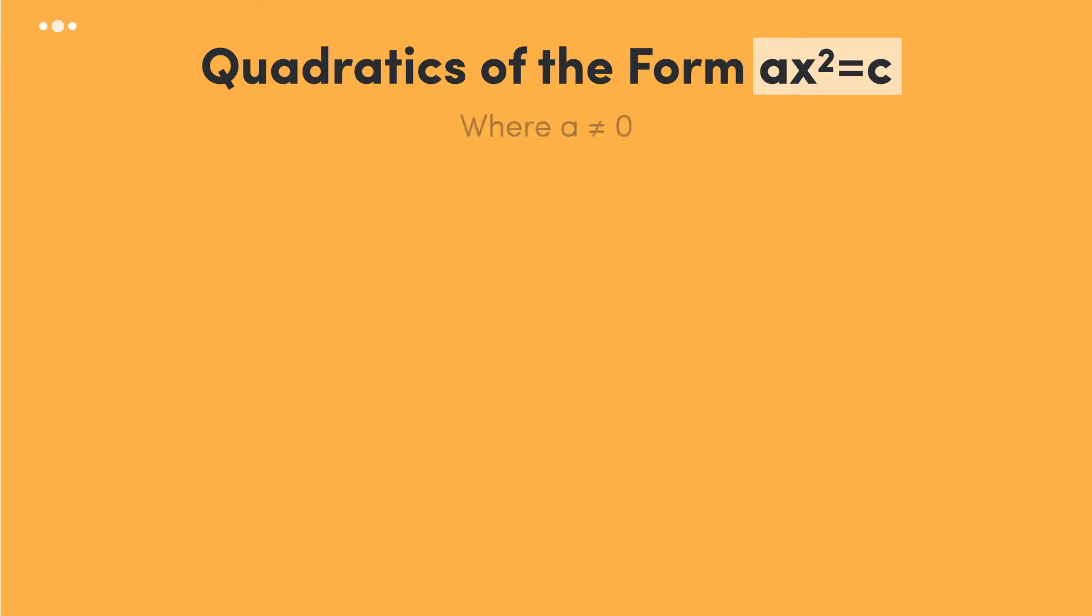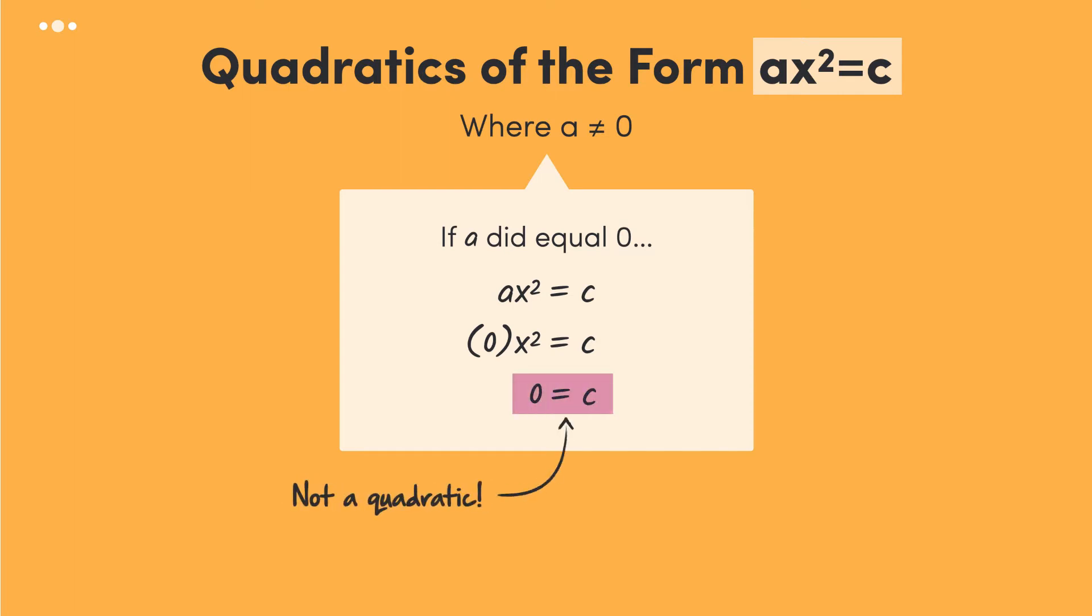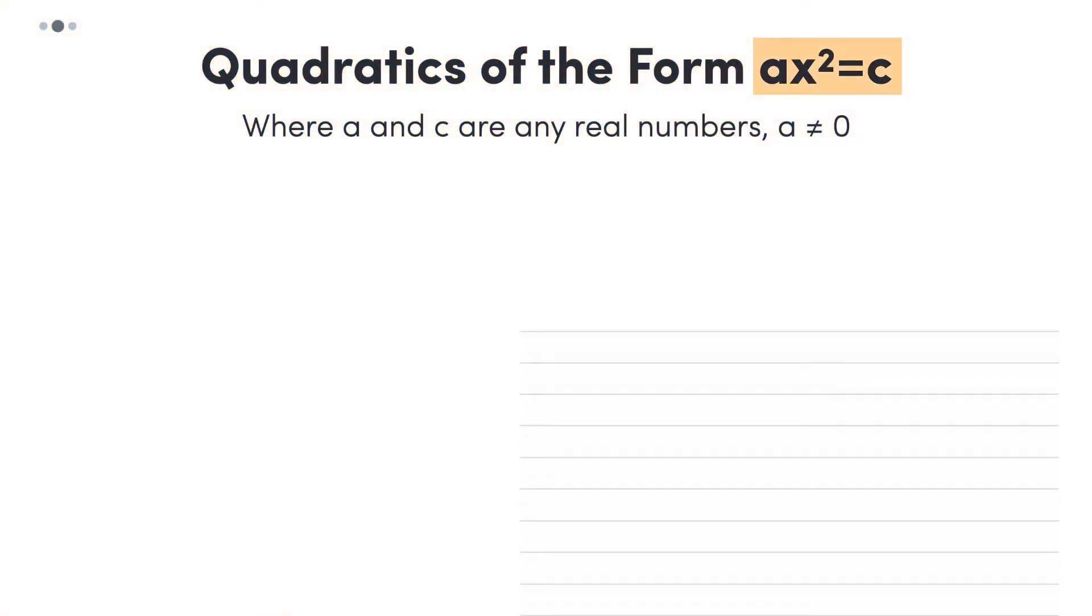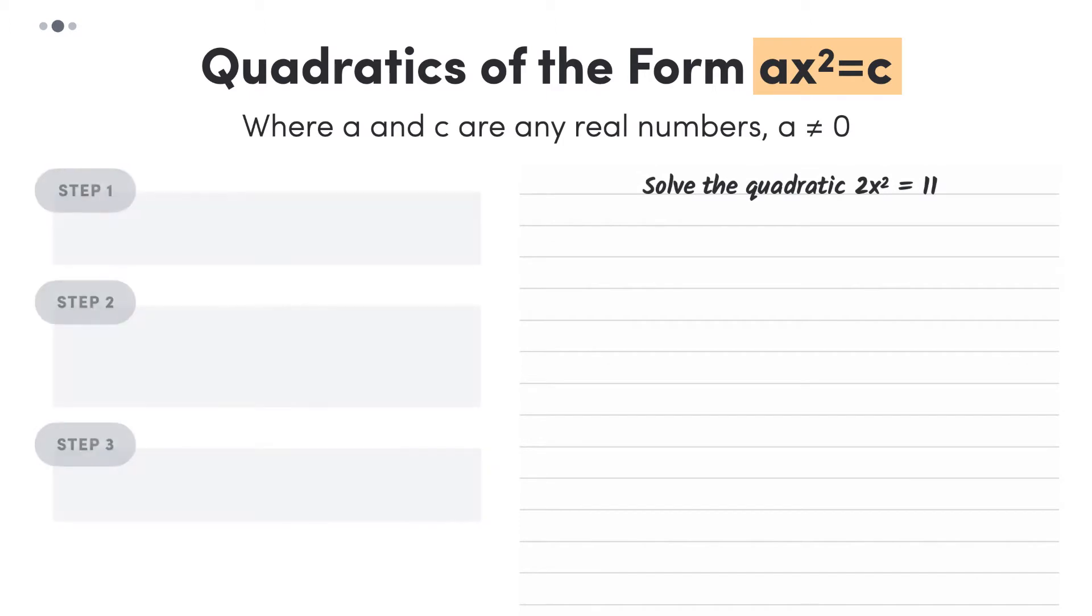Here, a could not be equal to 0, because if a was 0, then the whole left hand side would become 0, and we wouldn't have an x squared term anymore. As we know, if we remove the x squared term, then this is no longer a quadratic equation. So here, a and c are any real numbers, where a is not equal to 0, and x can be any variable. Let's take the quadratic 2x squared equals 11, to have an example to apply the steps to solving these types of quadratics to.